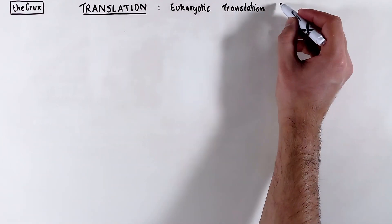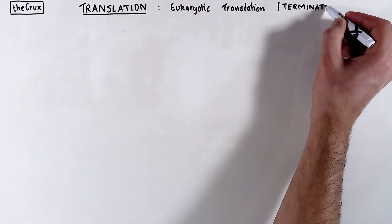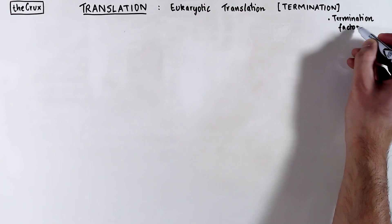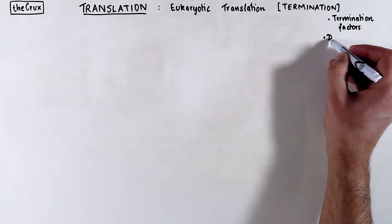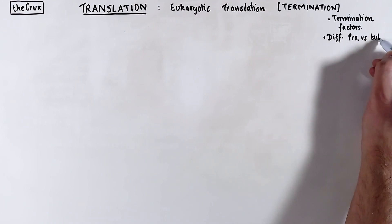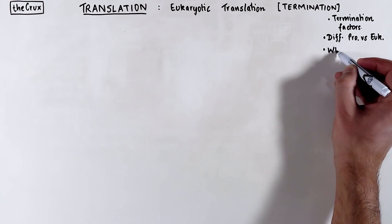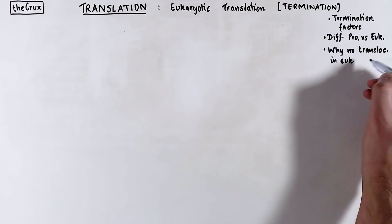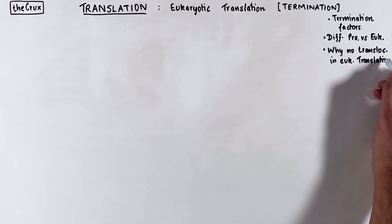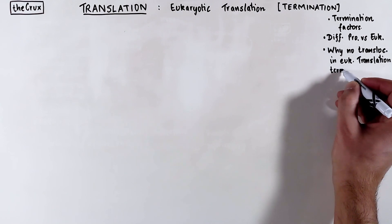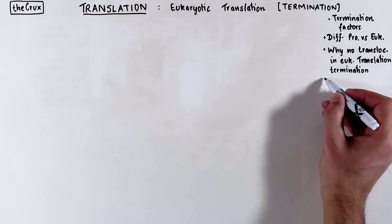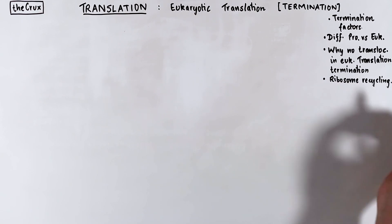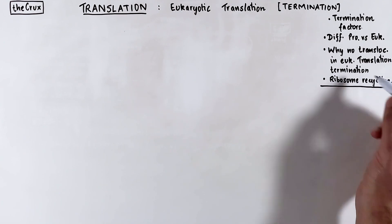In this video, we will discuss the termination step of eukaryotic translation. Specifically, we will discuss the termination factors and focus on one special factor in much more detail. As we discuss the mechanism of termination, we will contrast the process of eukaryotic termination with the process of prokaryotic translation termination. The major difference we will see in eukaryotic termination is that it does not include a translocation step, and ribosome recycling in eukaryotes is also very different from prokaryotes.